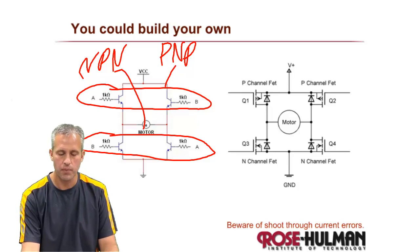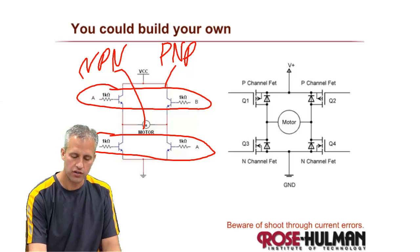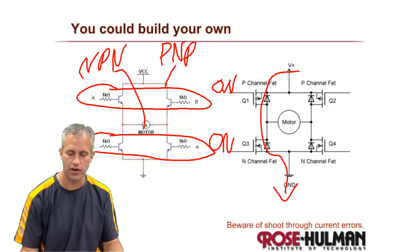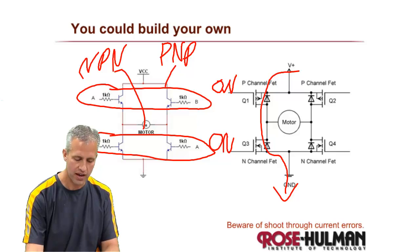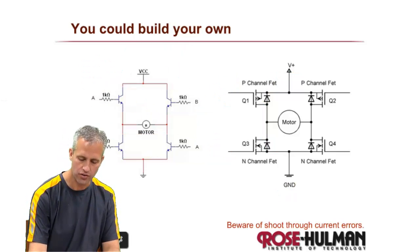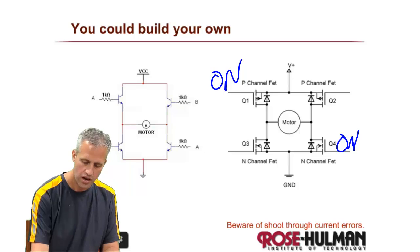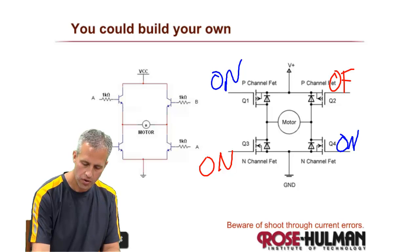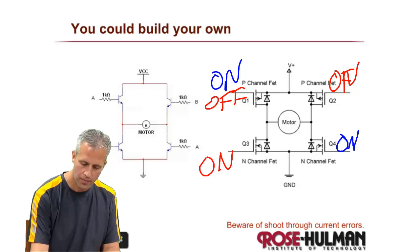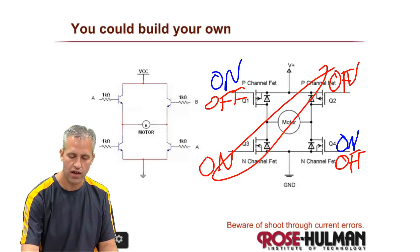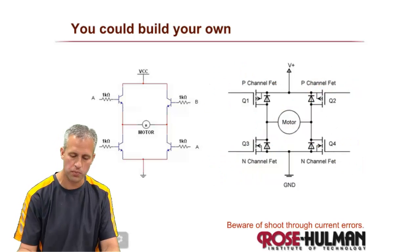The one reason that people don't build their own typically is you have to be really careful about shoot through current. Because if you even for a moment had both of them on the left on, which would be bad, current would just shoot right through there. It's called shoot through current. Because the idea is that you wouldn't ever intentionally do that, but sometimes it happens. You would only ever turn on these two when you're going in one direction, or when you're going the other way, you would turn on these two. So you could build your own, but to be honest most people don't.